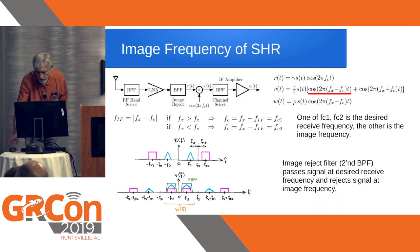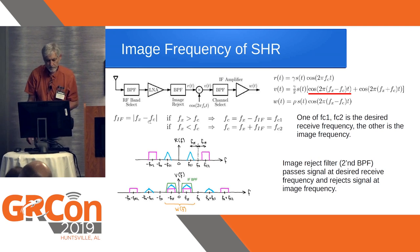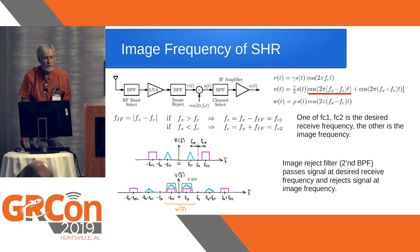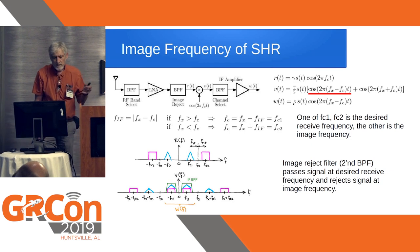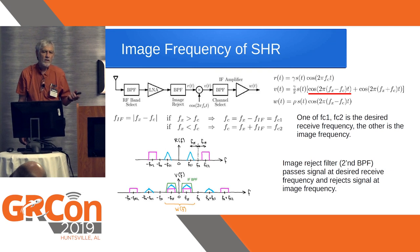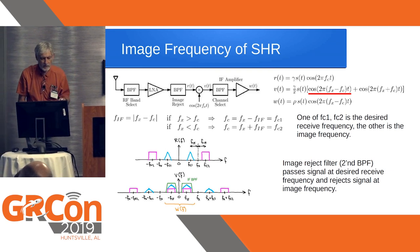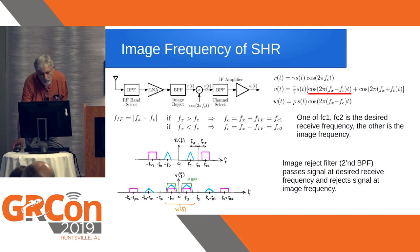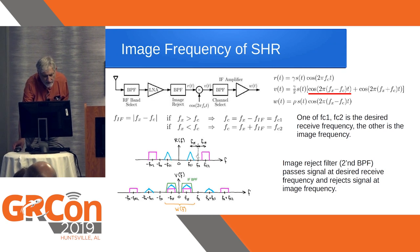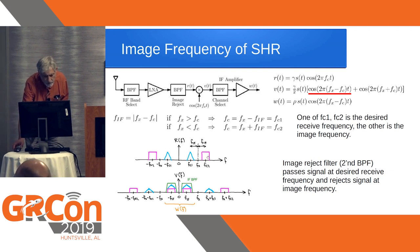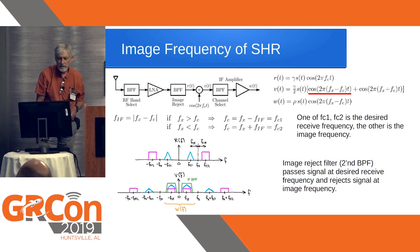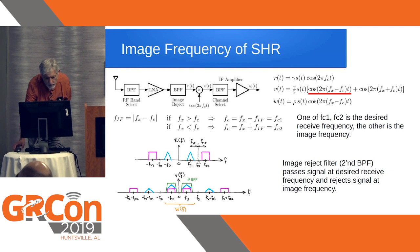Now the image frequency I mentioned briefly: graphically, after the mixer you have the difference of two frequencies. There is a carrier frequency C and a frequency X, and one can be bigger than the other, which leads to two frequencies from the input that can actually pass through the IF amplifier.